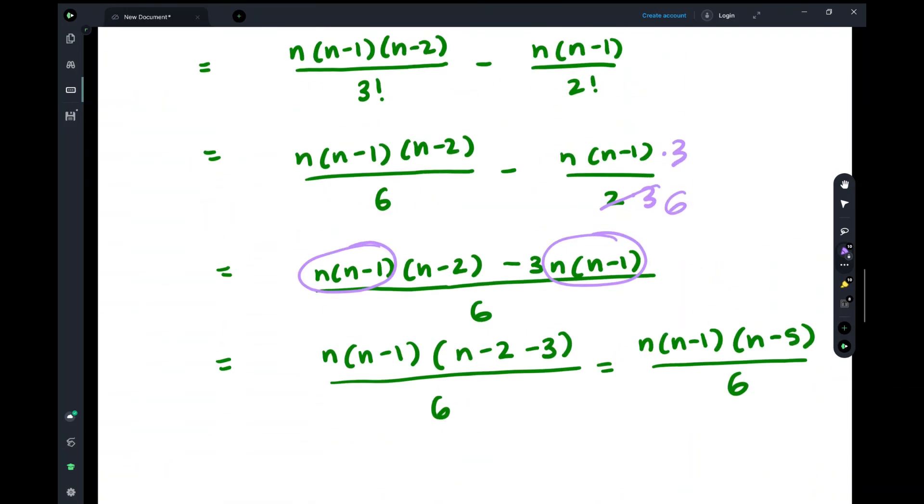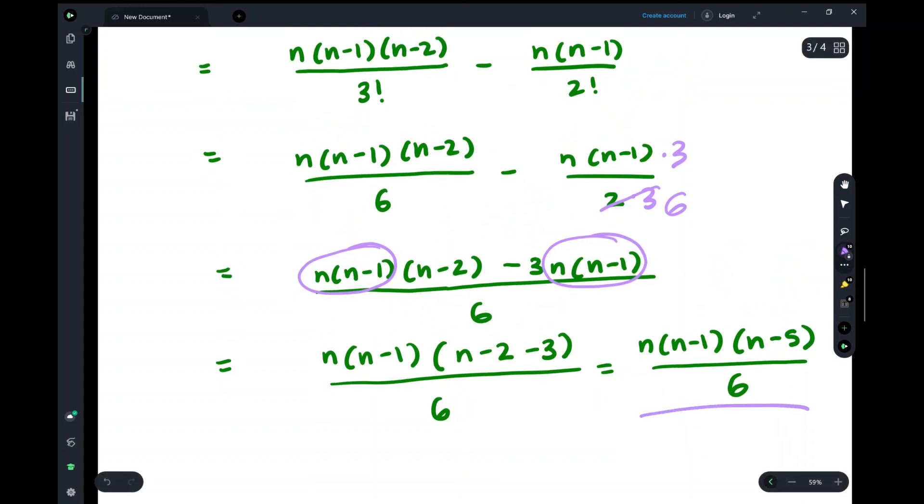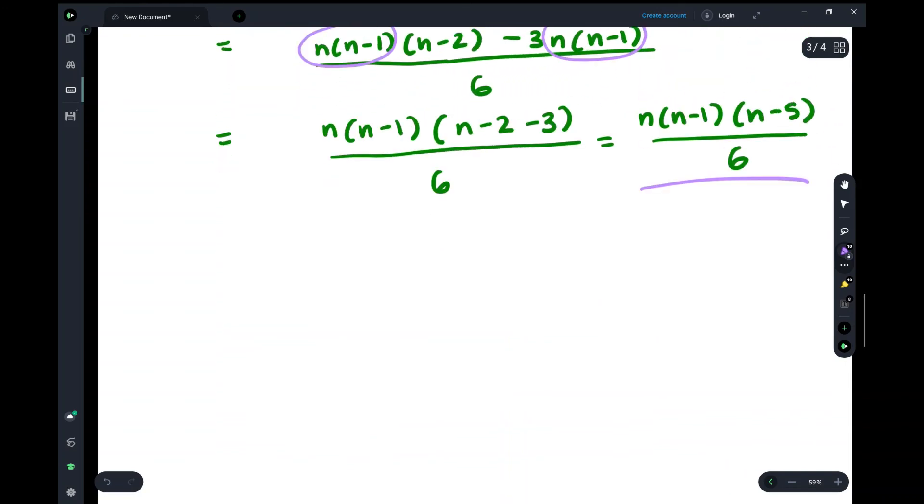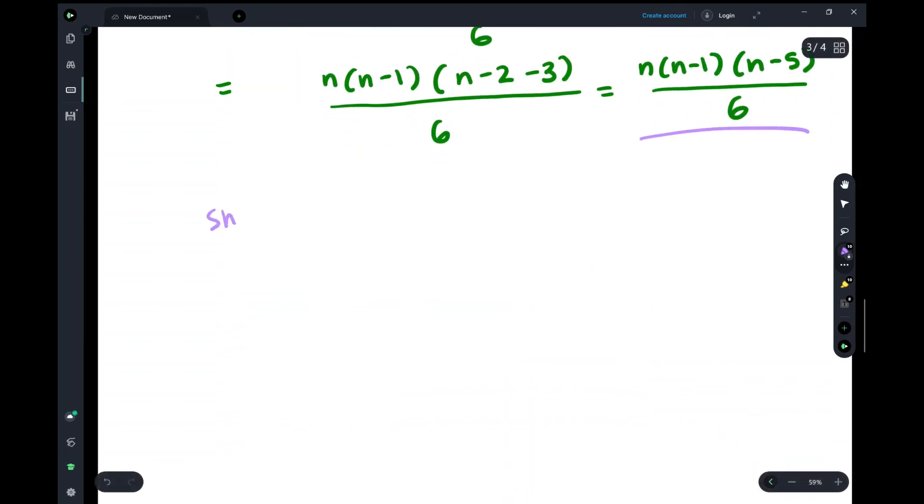And double checking, that is exactly what we have. So we have shown that (n choose 3) minus (n choose 2) equals n times (n minus 1) times (n minus 5) over 6. That is a simple example of a binomial coefficient. I will go ahead and do another example, a less concrete example, but the steps are very similar. So we'll just move on to doing that.